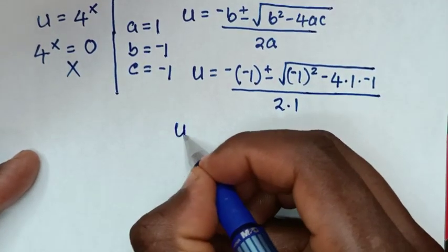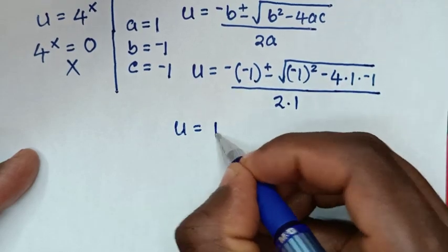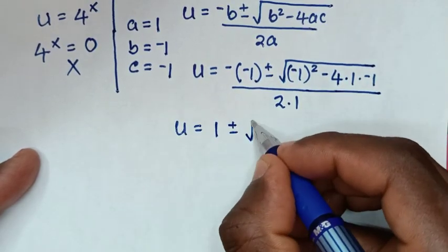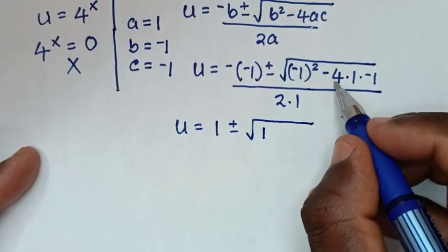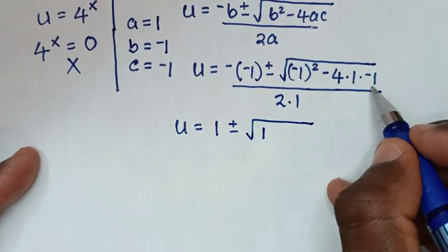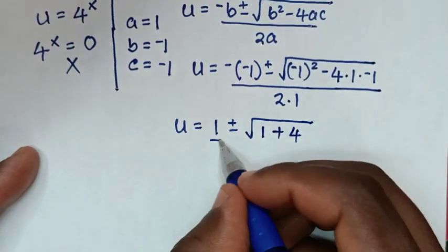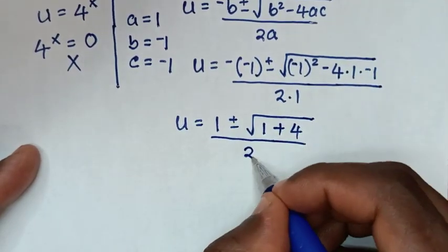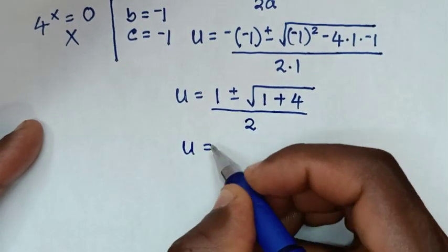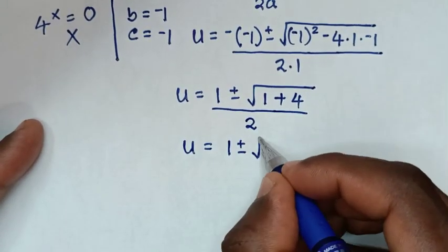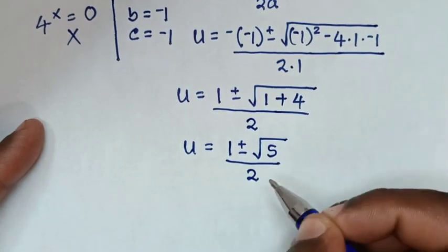Then it will be u is equal to: negative b becomes positive 1, plus or minus square root of negative 1 squared which is 1, minus 4 times 1 times negative 1 which is positive 4, over 2 times 1. That gives u is equal to 1 plus or minus square root of 5 over 2.